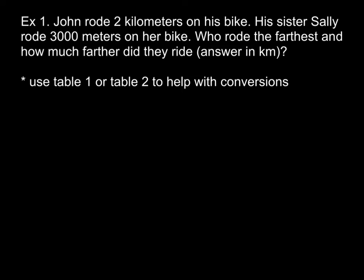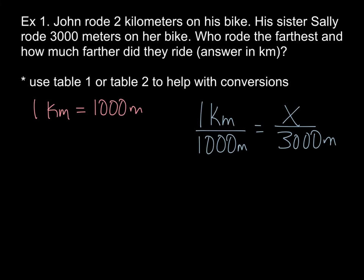All right. So the example says, John rode two kilometers on his bike. His sister Sally rode 3,000 meters on her bike. Who rode the farthest, and how much farther did they ride? Answer in kilometers. And then I put in here, use table one or table two to help with the conversions.